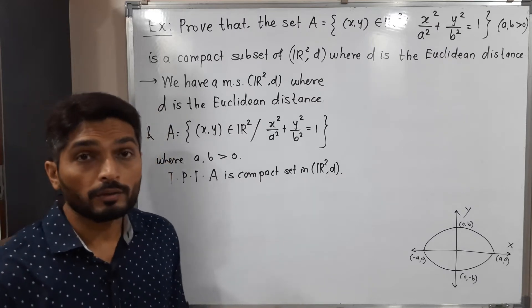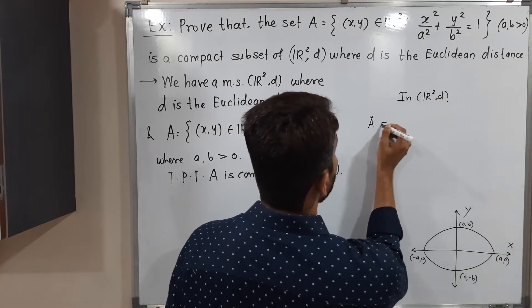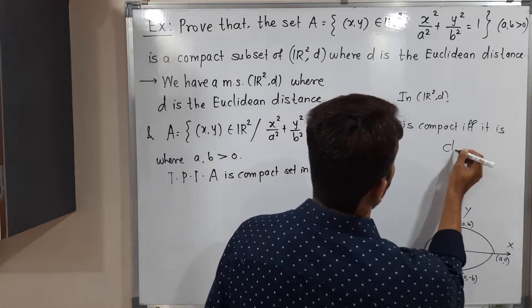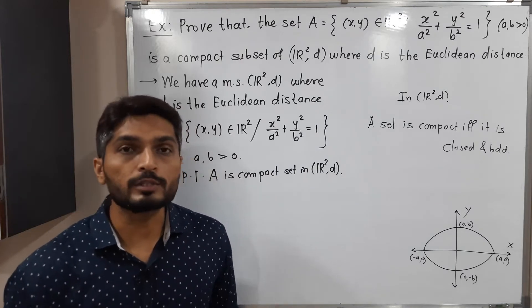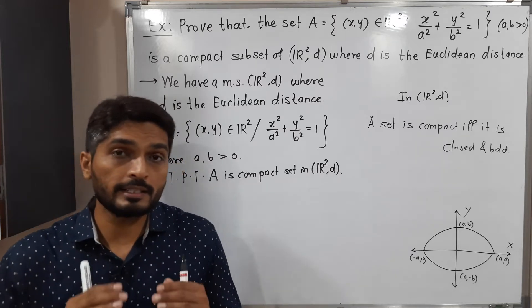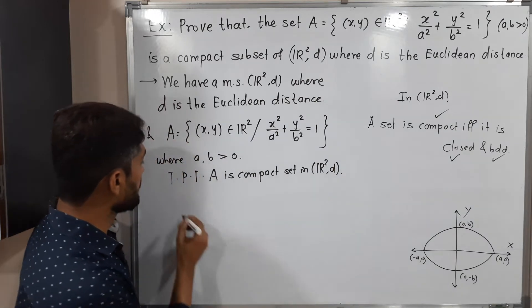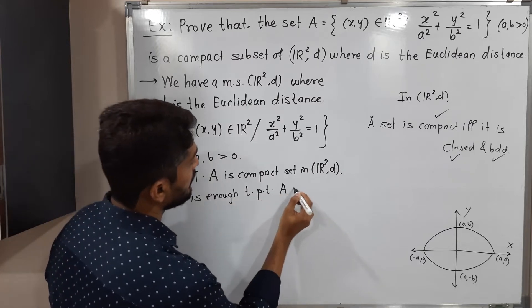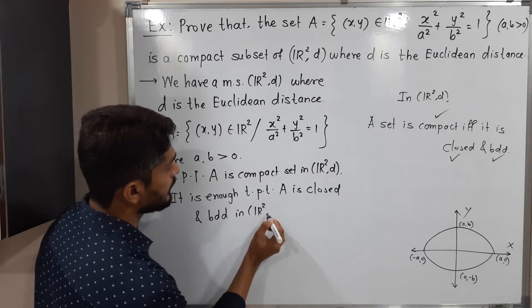There is one important result in R²D: a set is compact if and only if it is closed and bounded. So if we have any compact set in R²D, it is closed and bounded, and conversely, if it is closed and bounded, then it is compact. Therefore, it is enough to prove that A is closed and bounded in R²D.